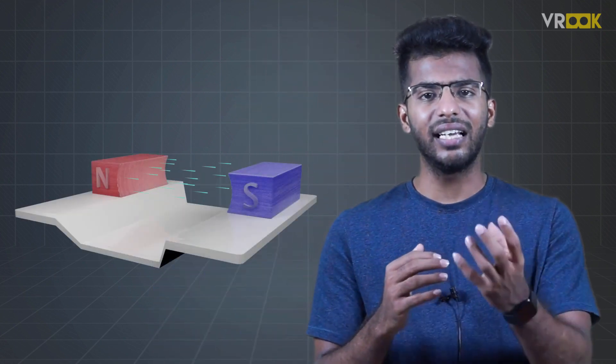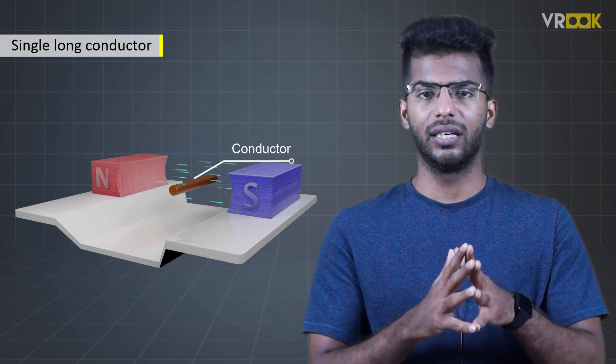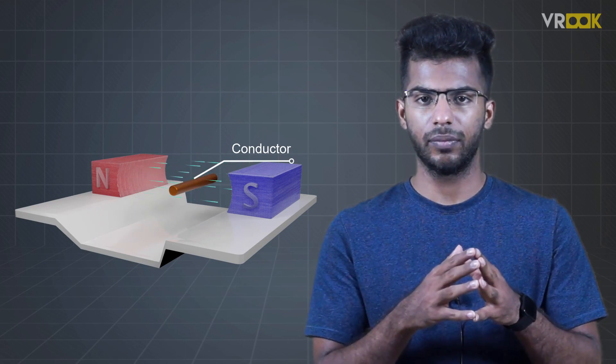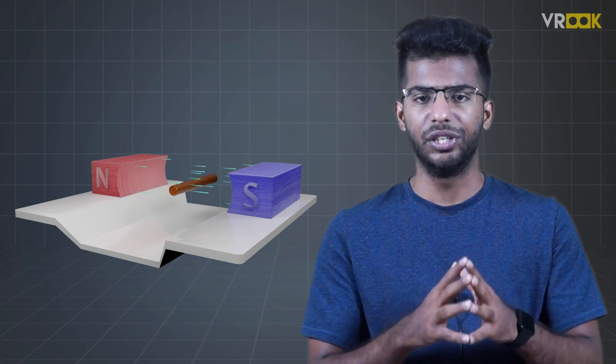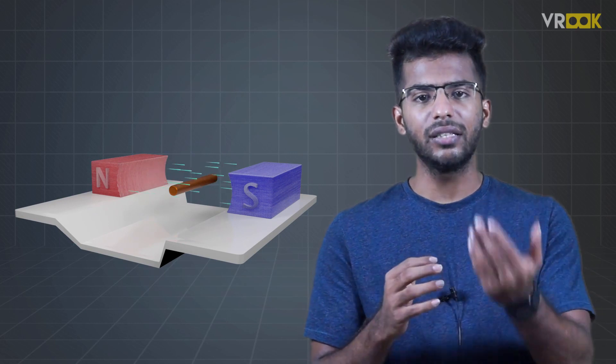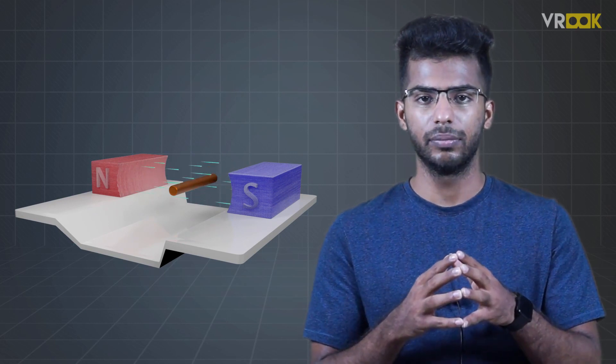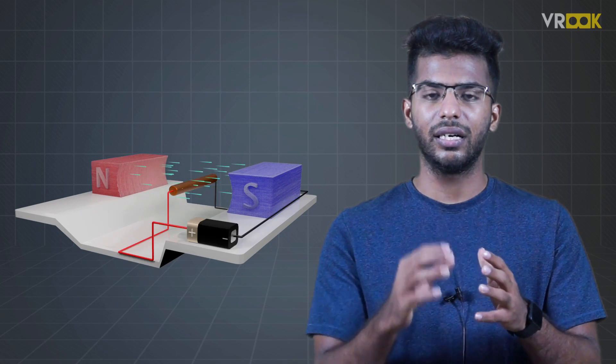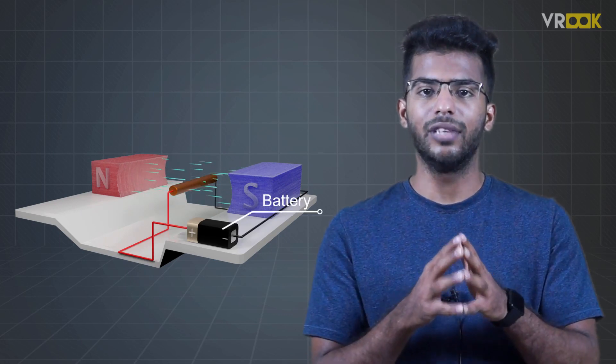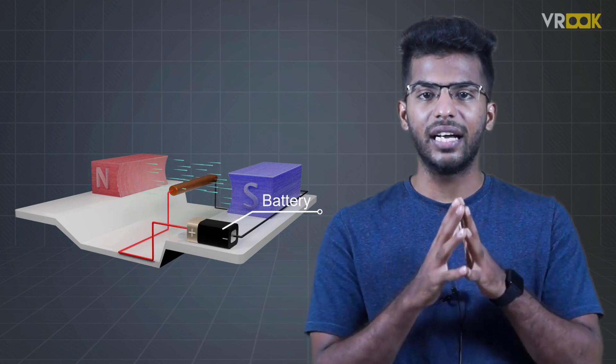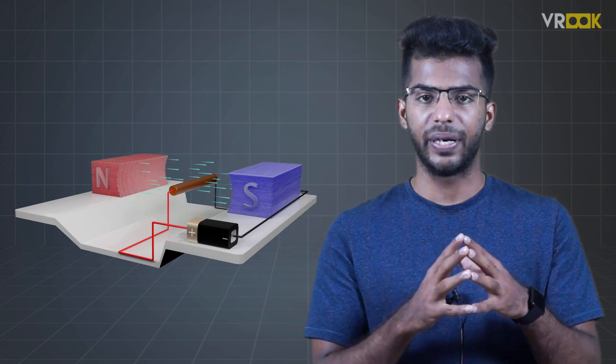let us take a single long conductor. We will place this conductor in a magnetic field. Nothing happens in this condition because the current is not flowing through the conductor. Let us connect a conductor to a battery. Now, we have current in the conductor which is placed in a magnetic field.